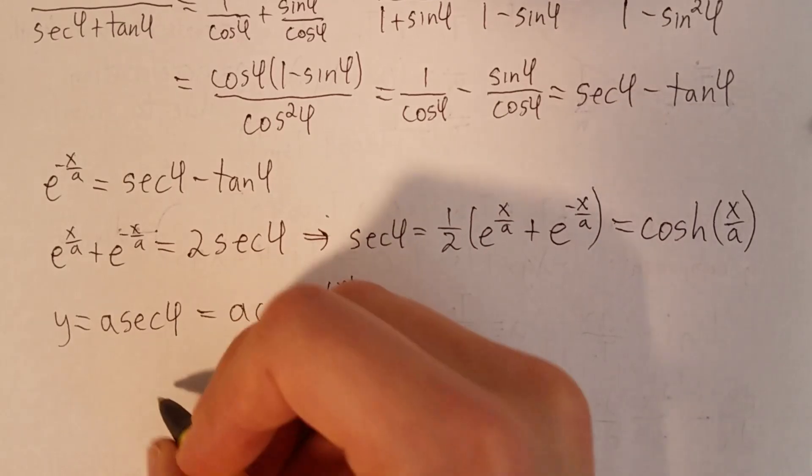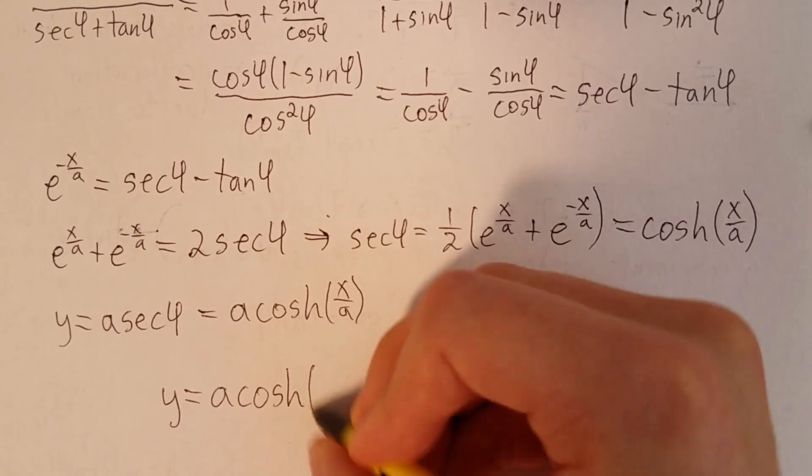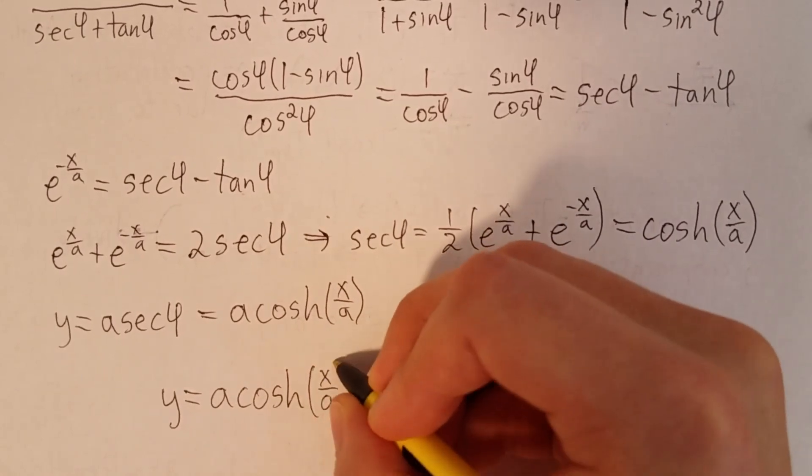So we finally have what we need. y is equal to a secant φ, or a times the hyperbolic cosine of x/a. And that is the formula for the catenary.